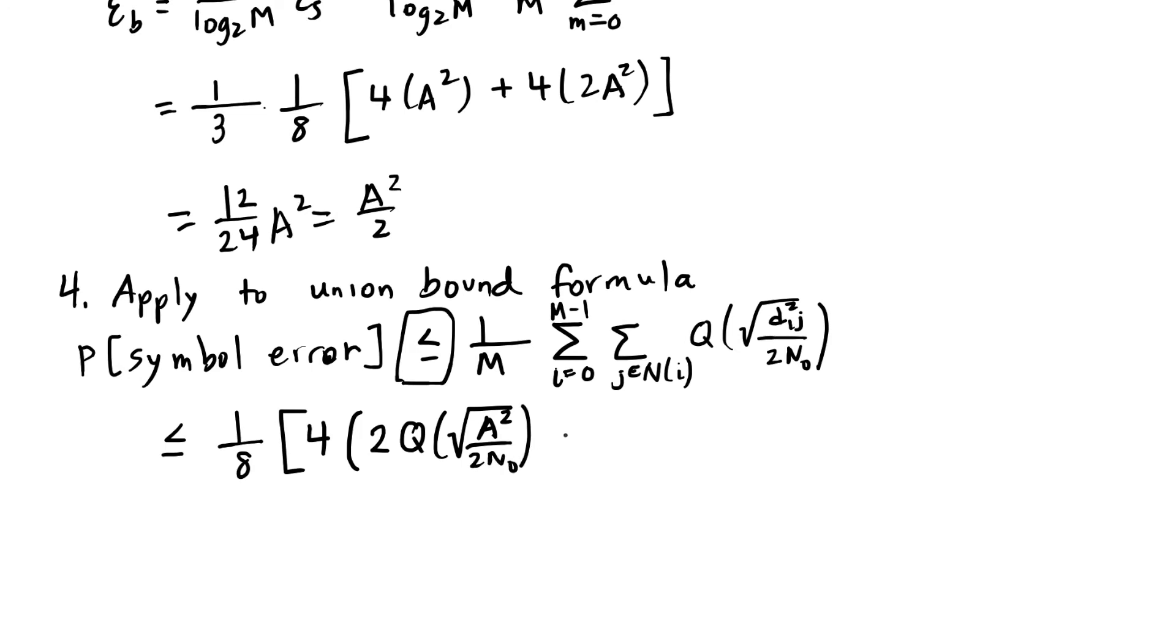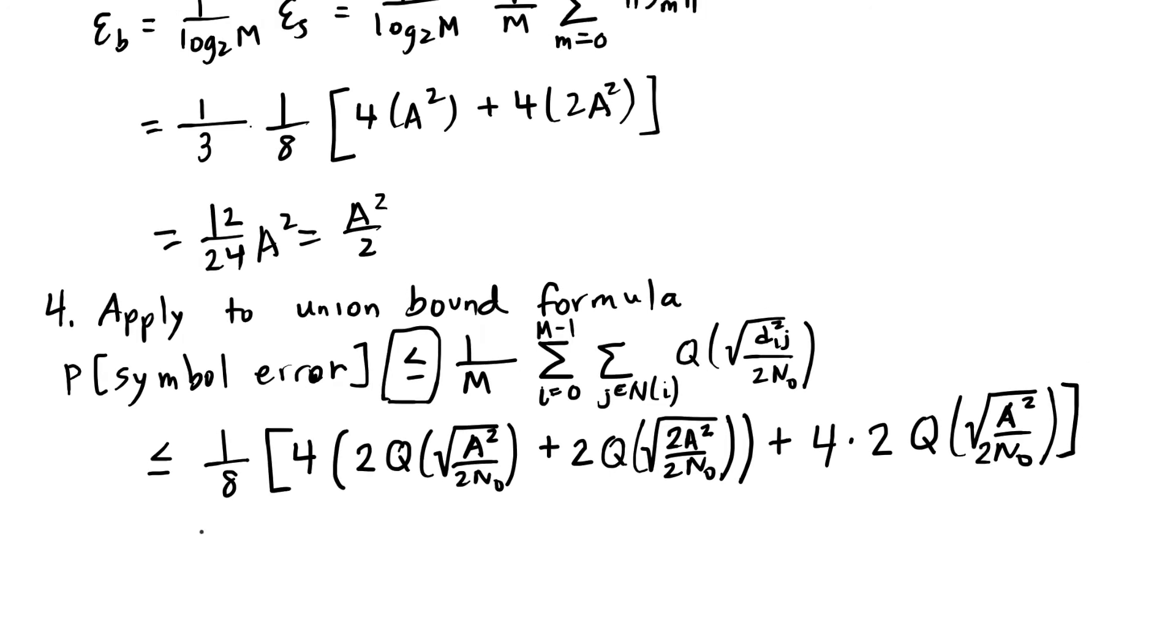Those symbols also have two symbols that are neighbors that are at a distance of square root of 2a. And so I'll end up with 2a squared divided by 2n0. And then finally, I have the corner symbols, which each have two neighbors. They have a distance of a, so I'll end up with a Q of a squared divided by 2n0.